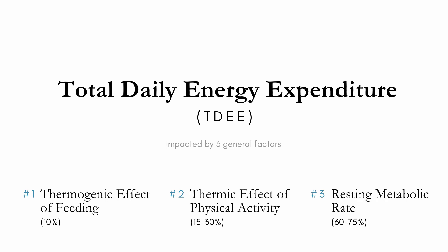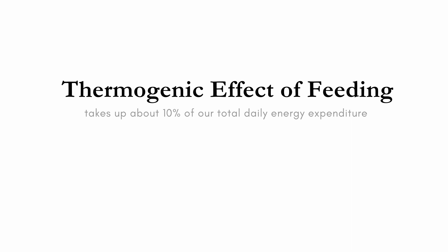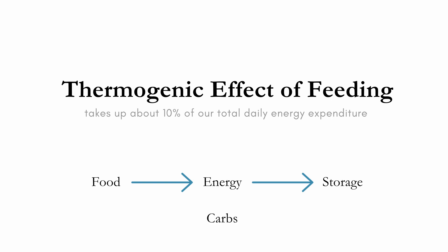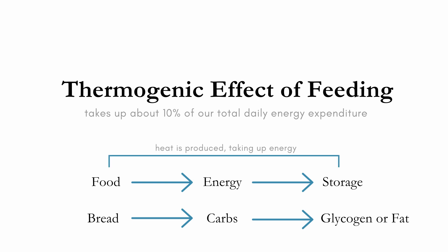The first component — the thermogenic effect of feeding — takes up about 10% of our total daily energy expenditure. This has to do with the fact that when we consume food, we must transfer the energy from that food into something our bodies can store. This is like when we store carbs from bread and convert it to glycogen or fat in our bodies. Energy transfer in our body is quite inefficient, so heat is produced with each energy transfer, and therefore takes up energy.